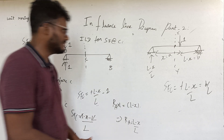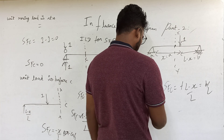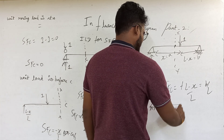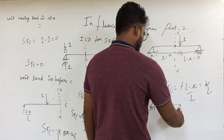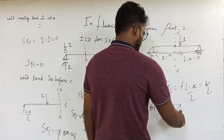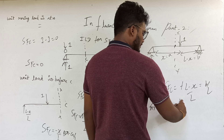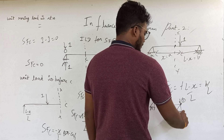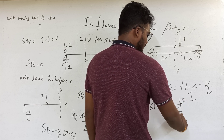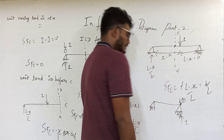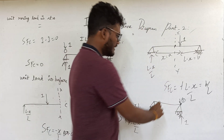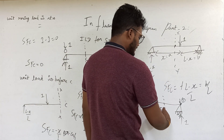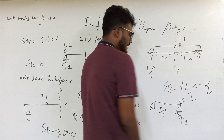The last case is when the unit load is on support B. By symmetry the reaction is 1. What is the shear force at C? Shear force at C is 0.